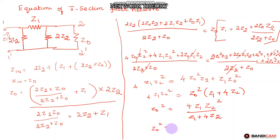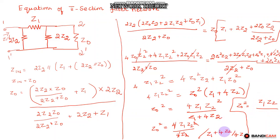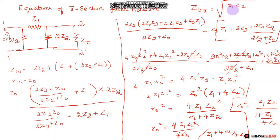Dividing the denominator by 4z2, we can rewrite this as z0 squared equals z1·z2 divided by (z1 divided by 4z2 plus 1). Therefore, z0_pi equals the square root of z1·z2 divided by (1 plus z1 by 4z2). This is the characteristic impedance of the pi network or pi section filter.